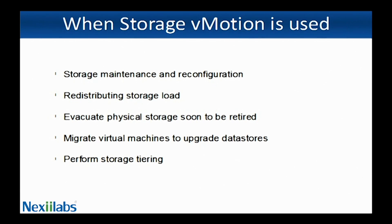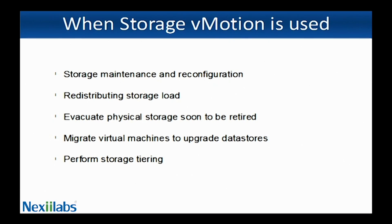You can use Storage vMotion to manually redistribute virtual machines or virtual disks to different storage volumes to balance capacity or improve performance. When you want to refresh your storage arrays, you can use Storage vMotion to migrate your workloads from an old array to a new array. You can also use Storage vMotion to migrate virtual machines when you upgrade datastores from VMFS2 to VMFS5, or to place your VM on a more efficient datastore for better performance.